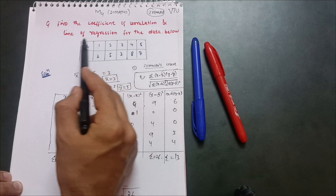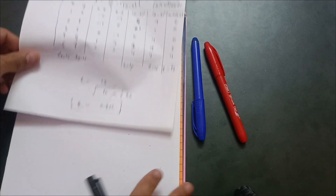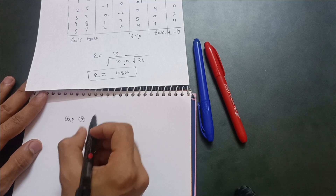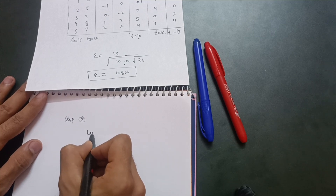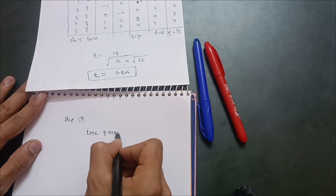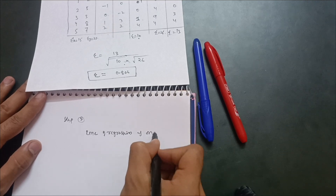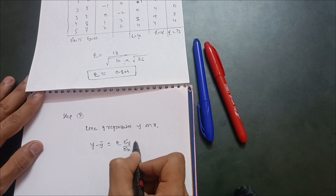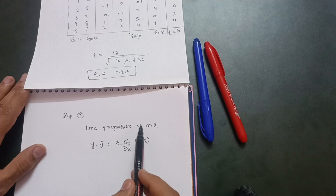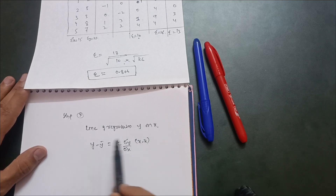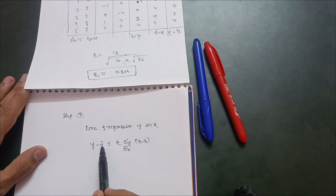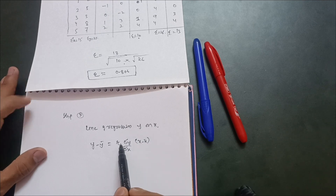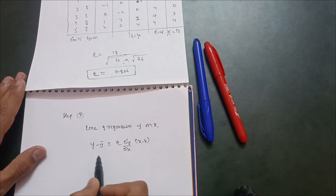There are two lines of regression: y on x, and x on y. The line of regression y on x is: y minus ȳ = r × (σy / σx) × (x minus x̄). When it is y on x, write y on the left side and x on the right side. r is the coefficient of correlation already calculated.